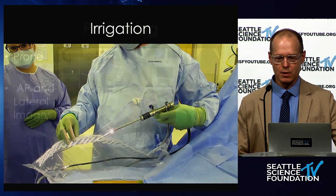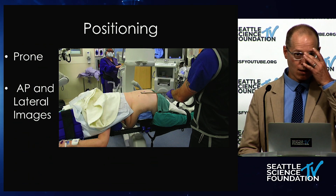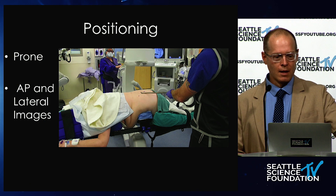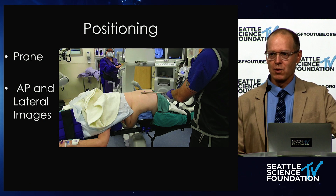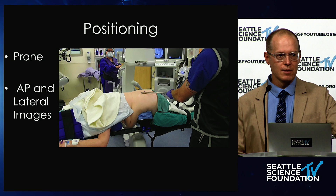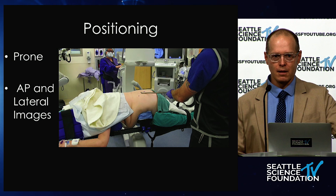As you watch this procedure, the most common question is: aren't you scared you're going to punch through the dura? And certainly when I first saw this, I was too. For prone positioning, I typically use a three-point bolster table. I do not use a Wilson frame. I just make sure that the knees are hanging so that we get some kyphosis and open up the interlaminar space a little bit better.